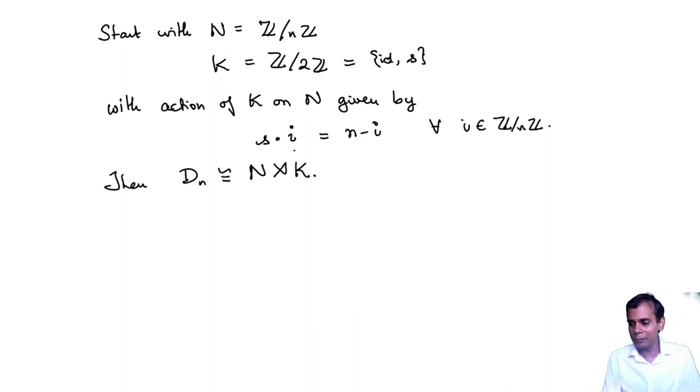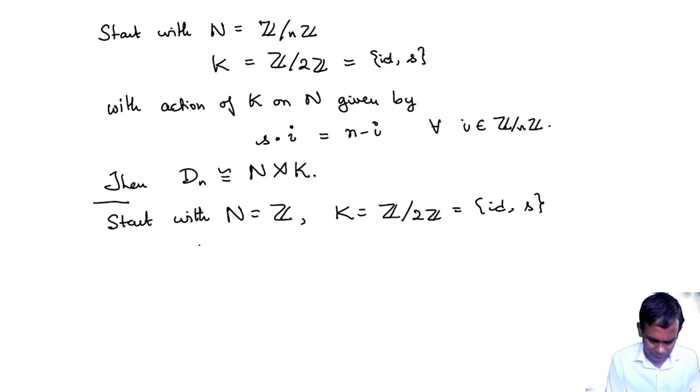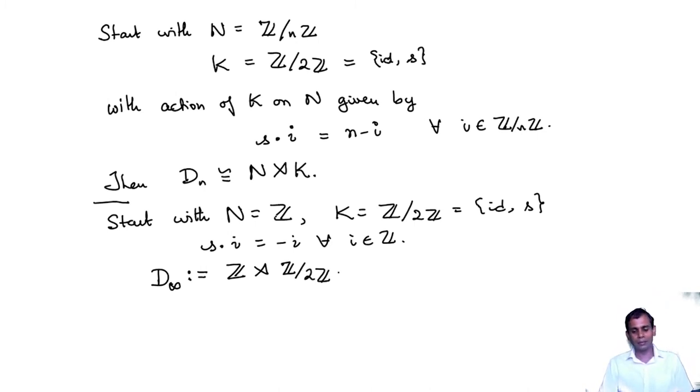But you can just tweak this a little bit to get new and interesting groups. So let's look at a new example. If instead of Z mod nZ we start with N equals Z, the group of integers, K equals as before Z mod 2Z, which I'll think of as identity comma S, and I write S dot i to be minus i for all i in Z, then you can construct another group which we'll call the infinite dihedral group. The infinite dihedral group is defined to be Z semi-direct product Z mod 2Z. Just by analogy this Z is like Z mod nZ as n goes to infinity, just in some informal sense. And so this is called the infinite dihedral group.